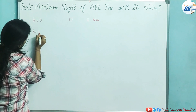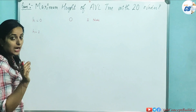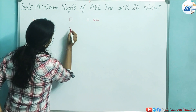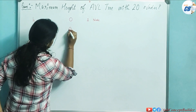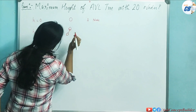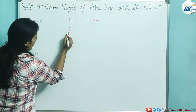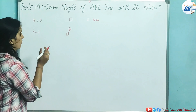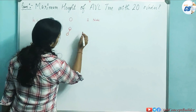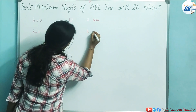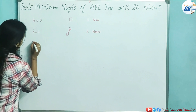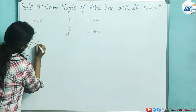Now for height 1, how many minimum nodes are required? If I have a tree with one root and one child, the height is 1. So the minimum possible number of nodes required for height 1 is 2 nodes.